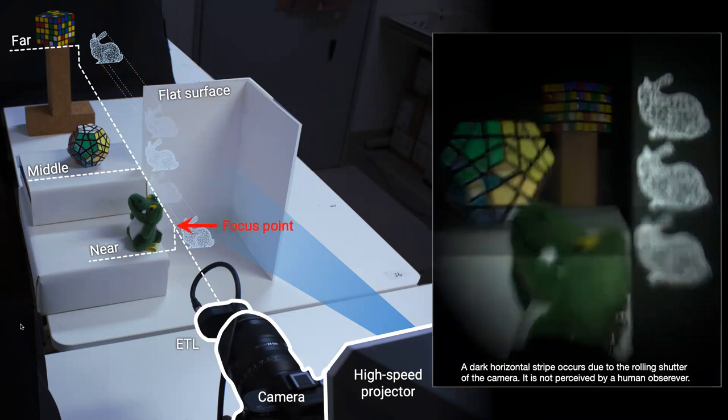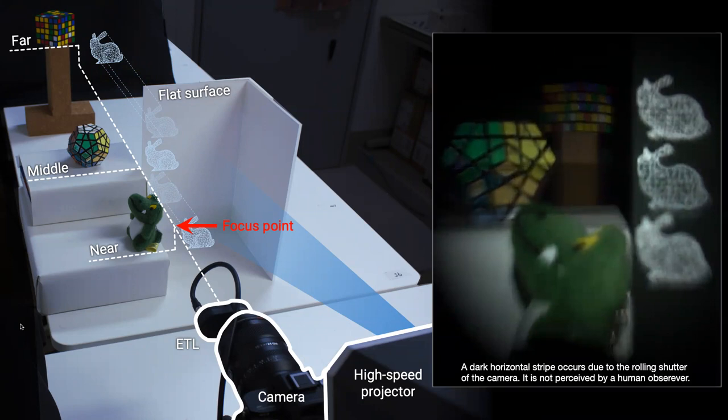So now please take a look at the right movie. The projected bunnies as well as the physical objects appeared focused from the top to the bottom, according to the focus distance movement.